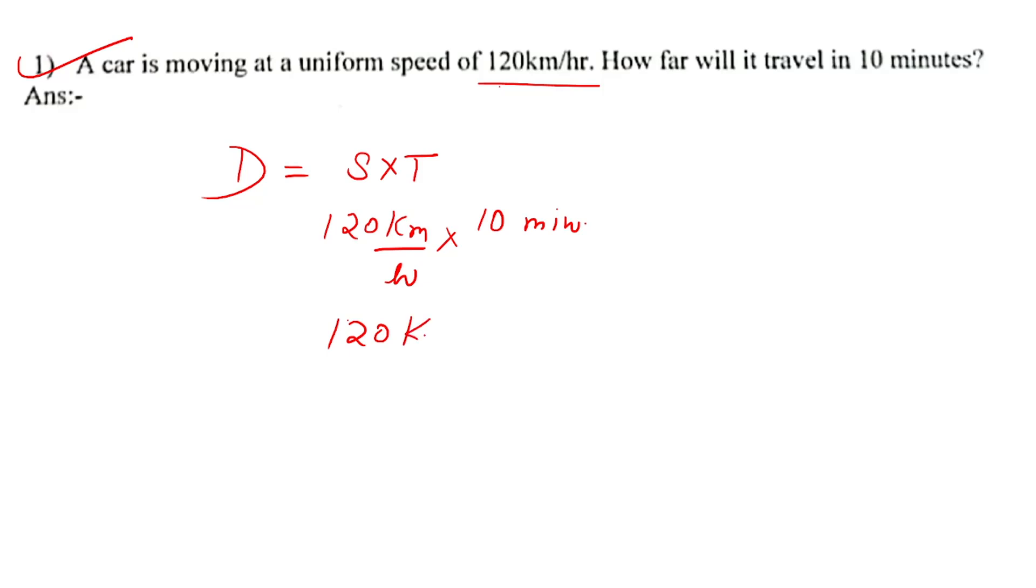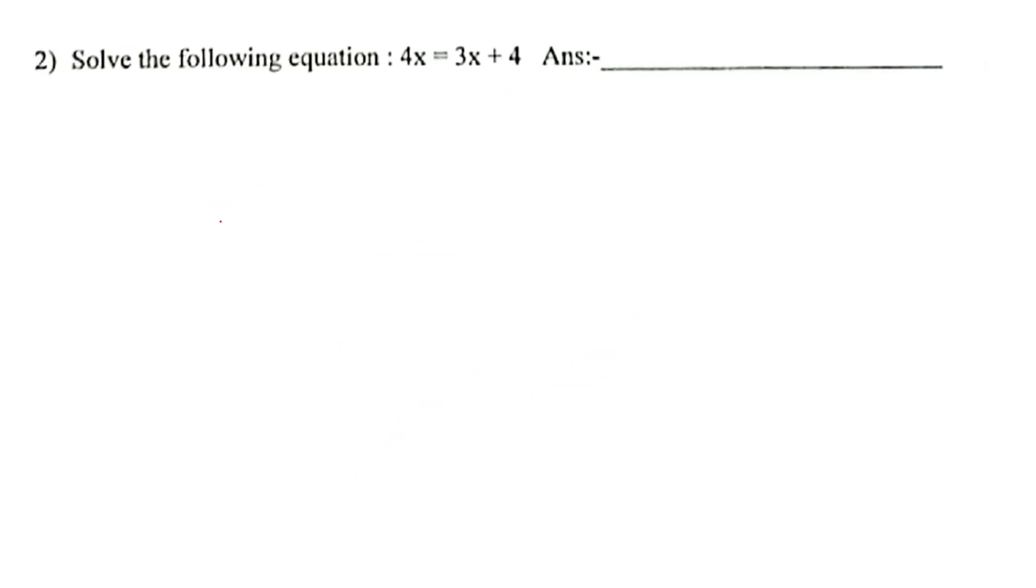Now, 120 km per hour and time is 10 minutes. When we cancel the denominator and numerator, units should match. Minutes are given but hour is given, so 10 minutes equals 10 by 60 hours, and this minute will become hour. Hour divided by hour cancels 60 times. Now 2 times 10 equals 20 km. This is the correct answer.